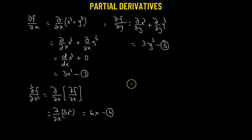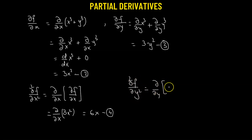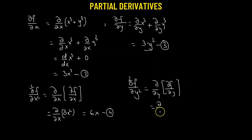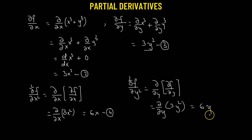Then we find the second partial derivative of f with respect to y. This equals the partial with respect to y of the partial of f with respect to y. The partial of f with respect to y is 3y², so we find the partial with respect to y of 3y², which gives us 6y. This is number 5.